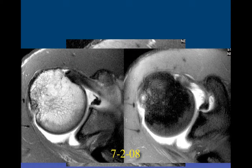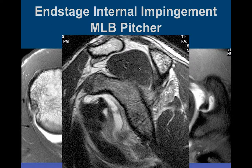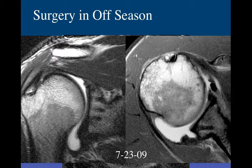Here we can see evidence of internal impingement plus a massively displaced posterior labral tear. Notice how hypertrophied the supraspinatus and teres minor muscles are - the subscapularis is large and all the other muscles are large - but notice how puny the infraspinatus is. That's because with this mechanism he probably had compression of the nerve to it earlier. He then had surgery in the off season with suture anchors visible, came back to play, and right before the season started he developed shoulder pain again and tore off the posterior labrum again.